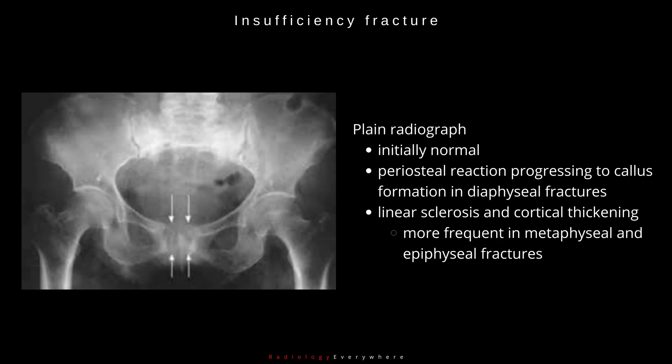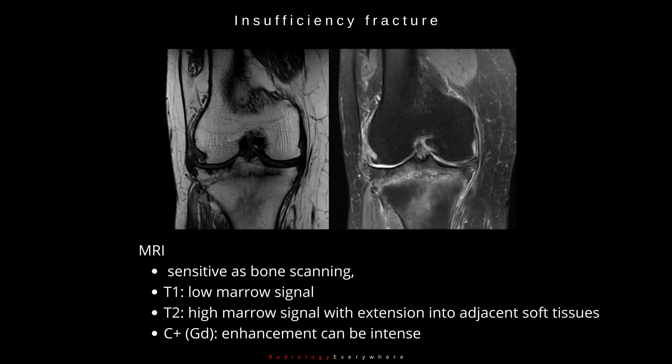Initial plain radiographs can be normal. You can see periosteal reaction progressing into callous formation in diaphyseal fractures, and linear sclerosis and cortical thickening more frequently in metaphyseal and epiphyseal fractures. MRI is as sensitive as bone scanning, and you can see low marrow signal on T1 and high marrow signal on T2.